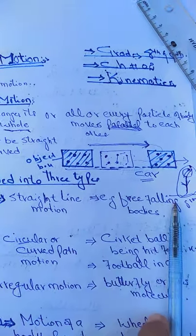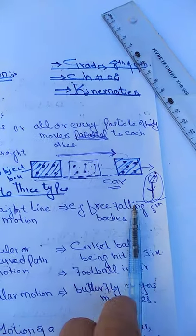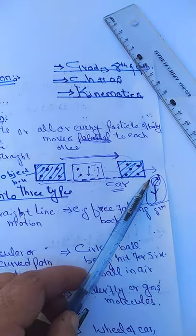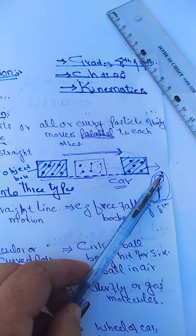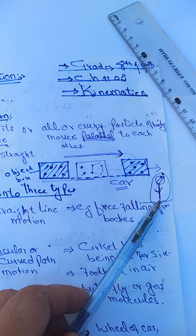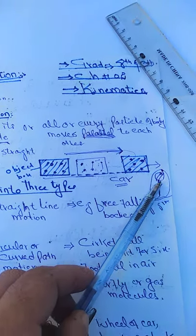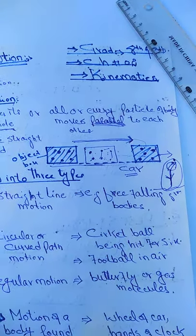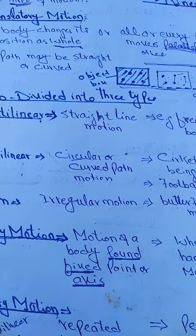If you consider a falling object - if a certain object is falling from a certain height towards the ground - the motion of that object towards the ground is in a straight line. So this type of motion is called rectilinear motion.